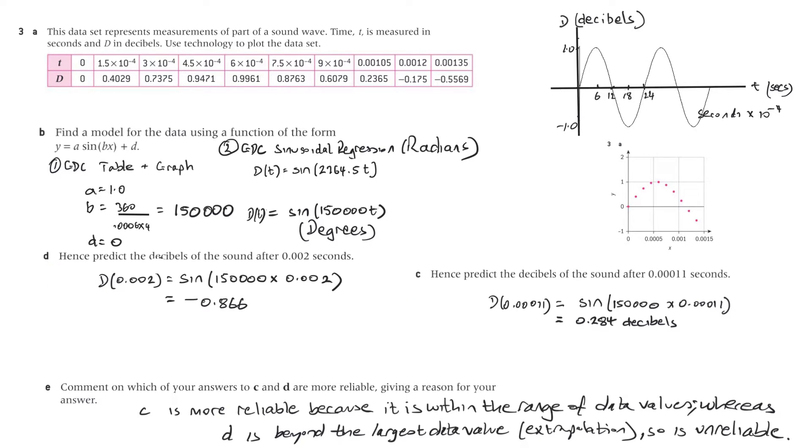And then we go to C, which I've put over here. So I've gone B and then C. Hence predict the decibels of sound after 0.00011 seconds. Now I've used the one that's in the book, the back of the book, which is the degrees one, and also it's my one as well. Sine of 150,000 times that, which is T, is 0.284 decibels.